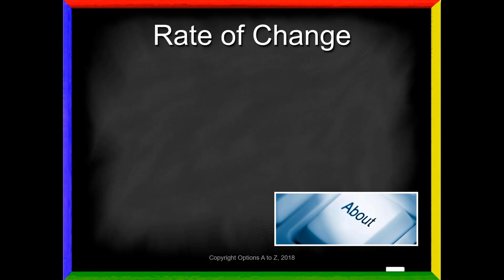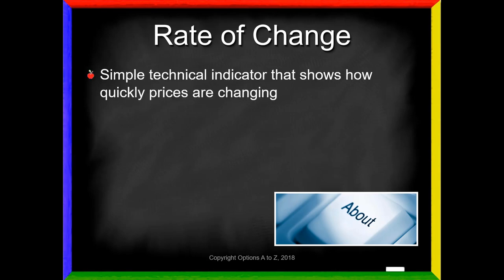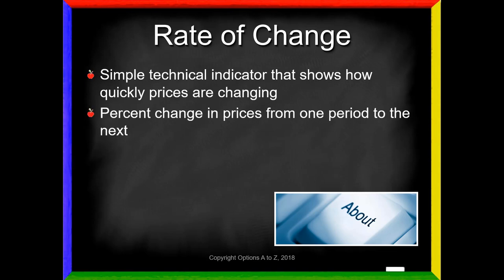So what exactly is the rate of change? It's a simple technical indicator that shows how quickly prices are changing, whether up or down. It's a really simple calculation — very simple to understand. You're looking at the percent change in prices from one period to the next. Most technical indicators have a look-back period — how many days back in time are we going to go to make our comparisons? A lot use 14, some use 21; we're always free to change them. We're comparing the percentage change from today's closing price compared to something back in time, let's say 14 days ago.